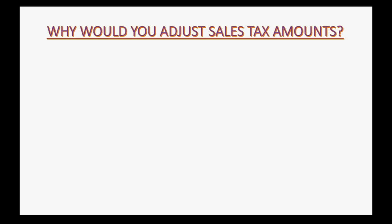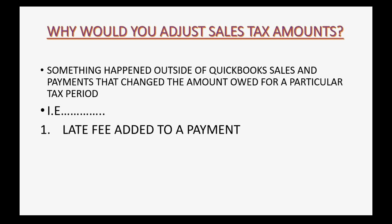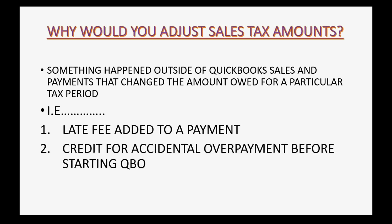Why would you adjust the amount of sales tax that QuickBooks Online tells you that you owe? It could be that something happened outside of your QuickBooks sales and payments that changed the amount owed for a particular tax period. For example, you may get a late fee added to your upcoming payment for overdue tax in a prior period. Or the opposite might be true — you might get a credit for an accidental overpayment for money that was sent in before you started using QuickBooks Online.